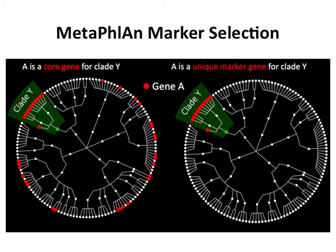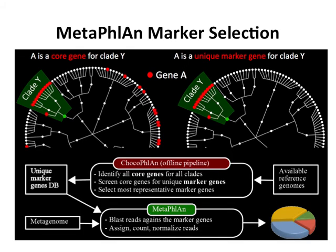A gene found in multiple clades is not useful as a marker. What you're looking for is a gene unique to one clade. To guard against unknown genomes where a marker might appear elsewhere, they don't depend on just a single marker — they use multiple markers to make predictions more robust. Most of the selection of these markers is done offline in a tool they call ChocoPhlAn. When you actually get your reads, you take quality-filtered reads — usually not assembled — and search them using Bowtie2 as a nucleotide search against their database markers, getting back relative abundances.